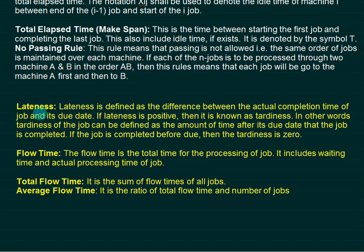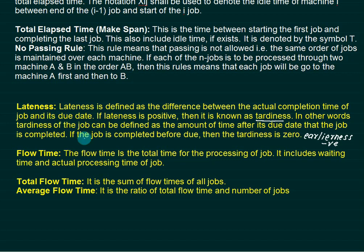Some parameters are used to check the performance of any scheduling model. The first is lateness — the difference between the actual completion time of the job and its due date. If lateness is positive, it is known as tardiness; in other words, tardiness is the amount of time after its due date that the job is completed. If the job is completed before the due date, tardiness is zero and it is called earliness. Earliness has a negative value while tardiness has a positive value.